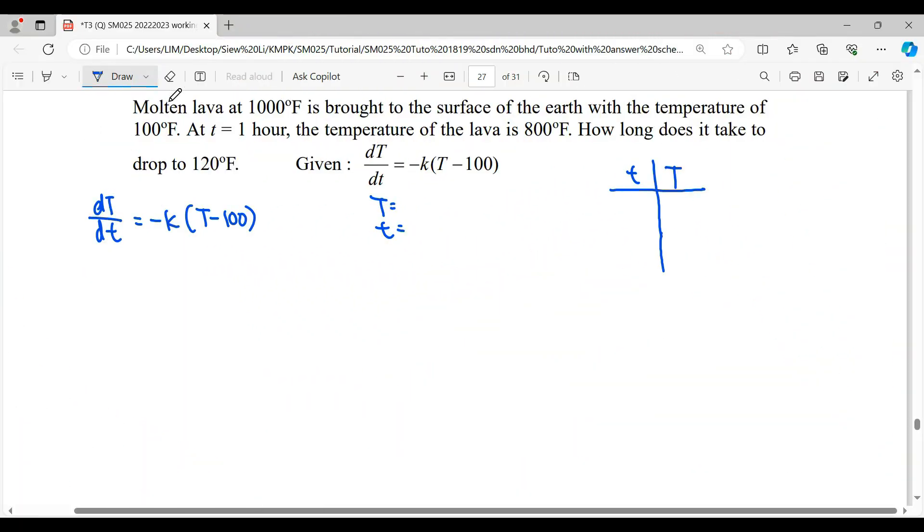For this question, molten lava at 1000 Fahrenheit is brought to the surface of the earth with the temperature of 100 Fahrenheit. At T equals 1 hour, the temperature of the lava is 800 Fahrenheit. How long does it take to drop to 120 Fahrenheit?